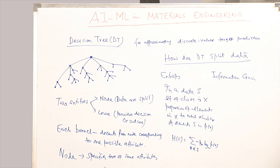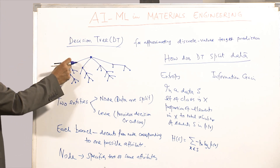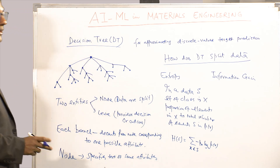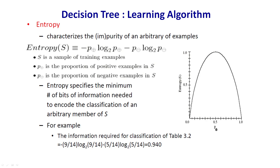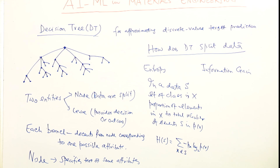If entropy is higher at one node compared to another, then you split the data; if entropy is decreasing, do not split the data. Entropy specifies the minimum number of bits of information needed to encode a classification of an arbitrary set S. For example, the information required for classification is 9 by 14. At 0.5, entropy has its maximum value — the same as in material science. Entropy is a key parameter that decides whether data is split or not.